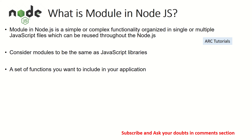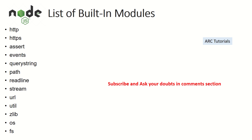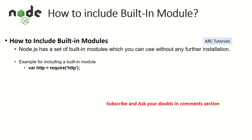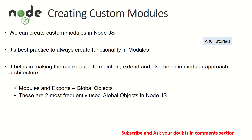In the previous episode we learned what a module is — a module is a simple or complex functionality organized in a single or multiple JavaScript files which can be reused throughout Node.js. Creating or writing modules is essentially like writing JavaScript libraries that can be reused across different applications or teams. We also briefly touched on built-in modules, which we will cover again in chapter 14 when we cover core modules.